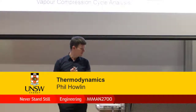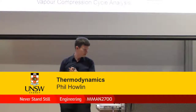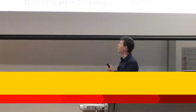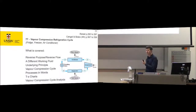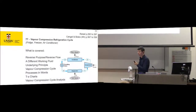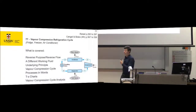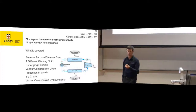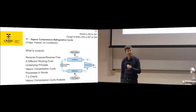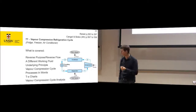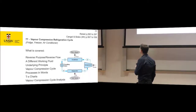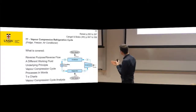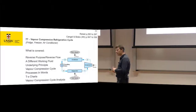Vapor compression refrigeration. This is what our fridge uses, this is what our air conditioner uses, this is what a heat pump for a hot water system uses if it's a heat pump hot water system. It can also be called a reverse Rankine cycle as well.